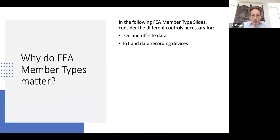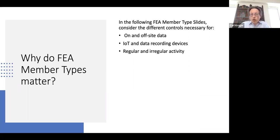There's also the issue of Internet of Things and various data recording devices — some maintained on site, some off site, some going directly to cloud, some to servers or computers, or maintained on the device itself. All of this needs to be controlled. There is what we're calling regular and irregular activity: if something is done on a regular basis, the methodology for controlling that data, handling it, and ensuring legal obligations are met can be laid out in solid procedures.